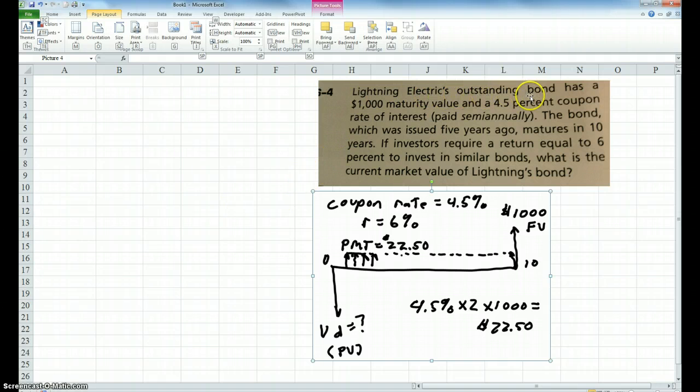Lightning Electric's outstanding bond has a $1,000 maturity value and a 4.5% coupon rate of interest, which is paid semi-annually. The bond, which was issued five years ago, matures in 10 years. If investors require a rate of return equal to 6% to invest in similar bonds, what is the current market value of Lightning's bond?